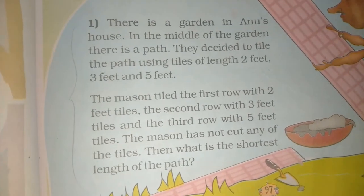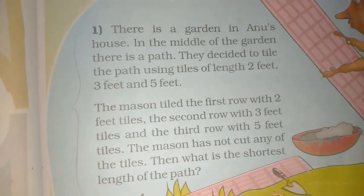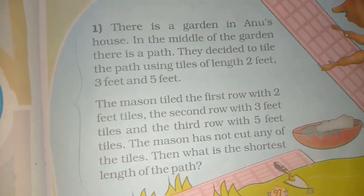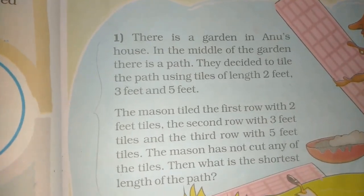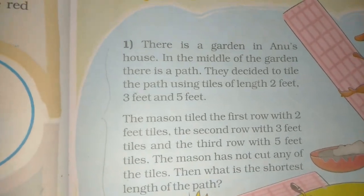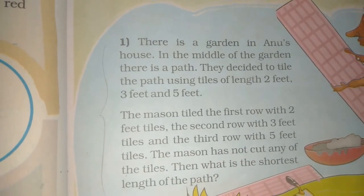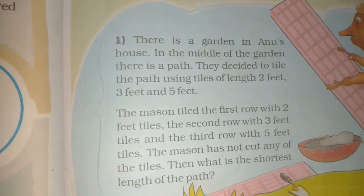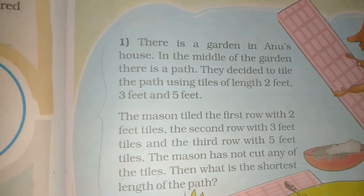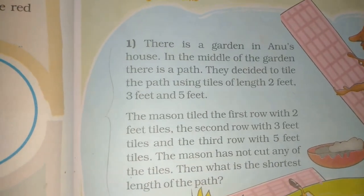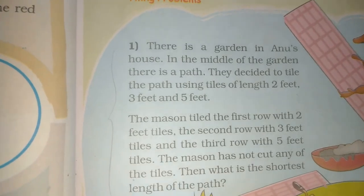Then, what is the smallest length of the path? They said the most important part is how large the path is and how the 3 feet tiles fit. We need to fix the tiles without cutting any. What are the two key concepts in this chapter? Multiples and factors. LCM and HCF. What should we do? LCM — Least Common Multiple.